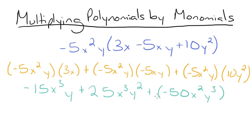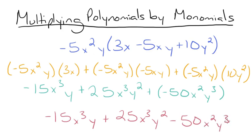We can simplify this last sign. And our final answer will be negative 15x cubed y plus 25x cubed y squared minus 50x squared y cubed. I hope that this video on multiplying polynomials by monomials has been helpful. Thanks for watching and happy studying!